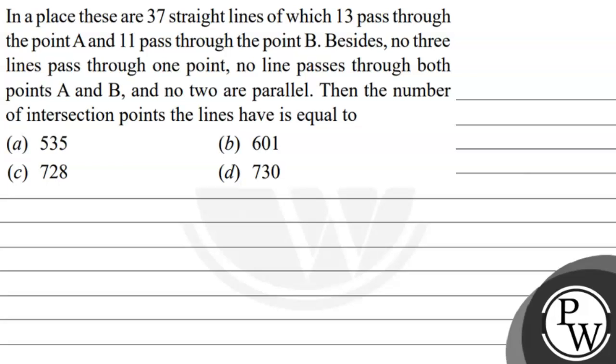Hello, let's hear a question. The question says in a place there are 37 straight lines of which 13 pass through point A, 11 pass through point B, besides no 3 lines pass through 1 point, no line passes through both points A and B, and no 2 are parallel.